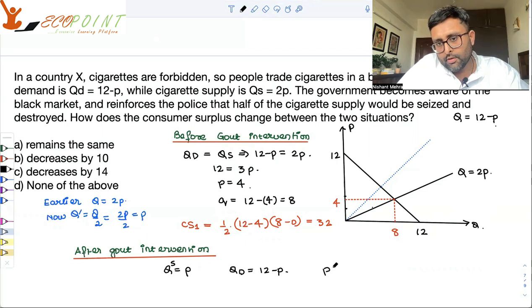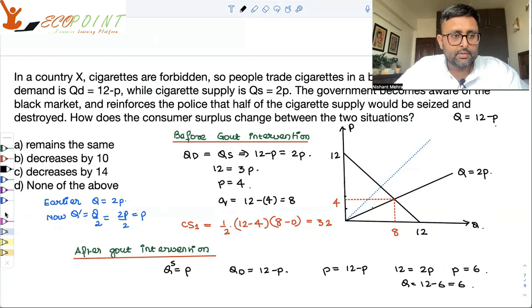So I'll put demand equals to supply. 12 minus P equals P. P is equal to 6, and you can put P equals to 6 in either demand or supply, so it becomes 12 minus 6, which is 6. So you have 6 quantity.